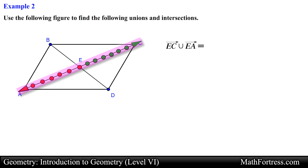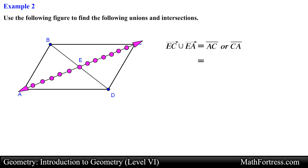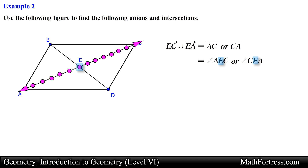This new set will form a line segment which can be denoted as line segment AC or line segment CA. We can also argue that the union of these two rays forms an angle — in this case a straight angle, specifically angle AEC or angle CEA with the vertex located at point E. Straight angles will be discussed more fully in a later video. For now, either the line segment or angle are acceptable answers.